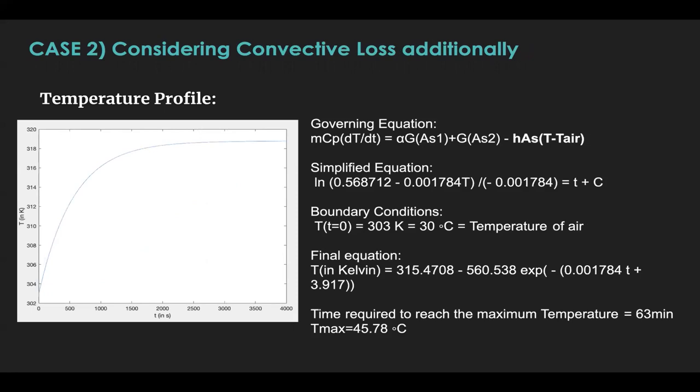In case 2, we also consider the convective losses. You'll observe that in the governing equation, we correspondingly add a convective loss term, which is H times A times S delta T. On simplifying and incorporating the boundary conditions, we obtain the final equation. And we see that the temperature here in this case varies exponentially with time.